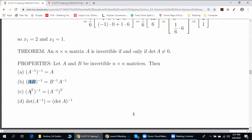Property C: if we find inverse of A transpose, it's same as transpose of A inverse.